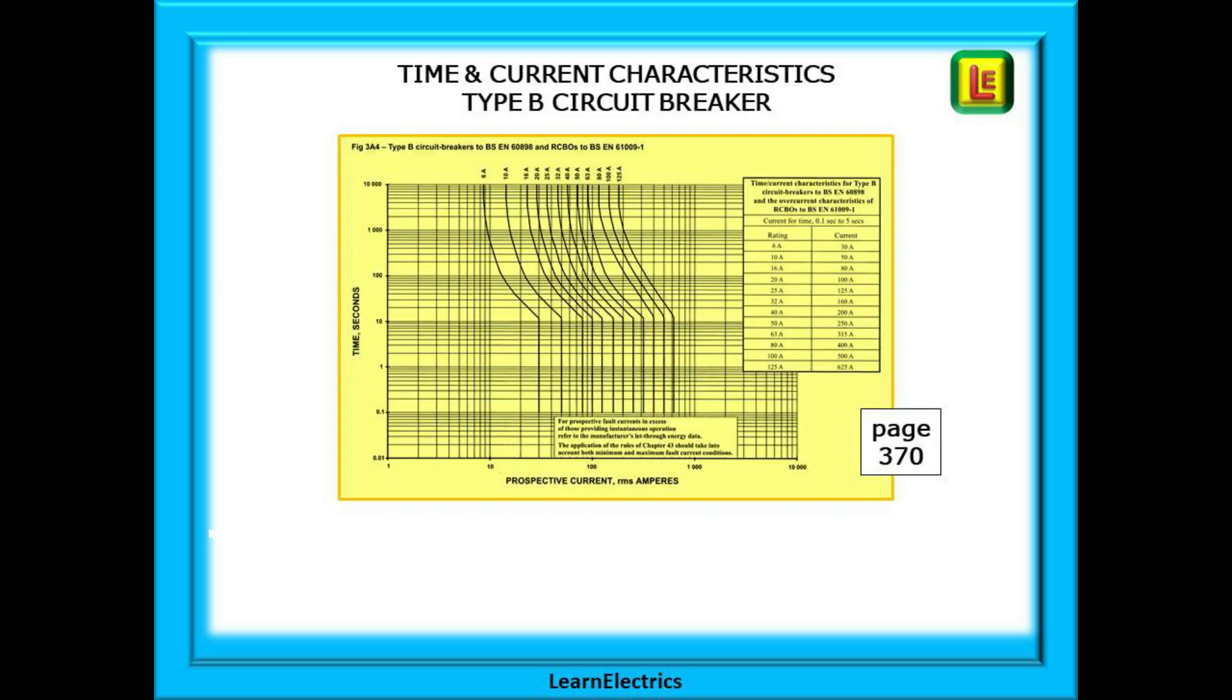Shown here is the chart from page 370. This is the time and current characteristics for a type B breaker or RCBO. If we know the time we want the breaker to operate in, this chart will tell us the fault current that must flow. In other words, time and current characteristics.